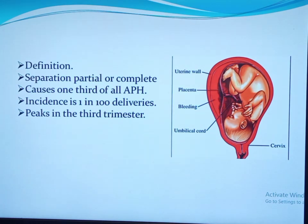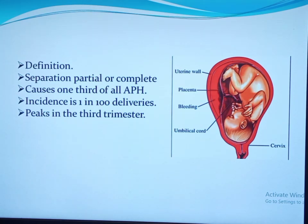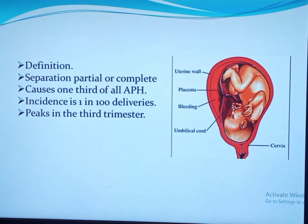Partial separation causes lesser maternal-fetal sequelae compared with complete separation. Abruption of placenta is responsible for one-third of antepartum hemorrhage. The incidence is one in 100 deliveries on average, ranging from one in 80 to one in 250 deliveries. The variation in incidence is due to different diagnostic criteria used and increased detection of lesser degrees of placental abruption in recent years.